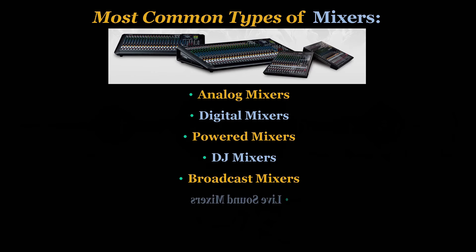Number six is live sound mixers. Live sound mixers are designed for use in live performances and events. They may include features such as multiple effects processors, EQ controls, and built-in compressors and limiters. Number seven are studio mixers. Studio mixers are designed for use in recording studios and often include high-quality preamps, routing options, and advanced monitoring capabilities. Please keep in mind that each type of mixer has its own pros and cons, and the choice of mixer will depend on the specific requirements of the user.